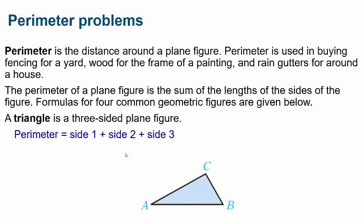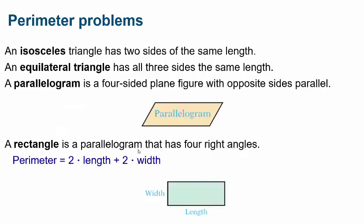Now let's move on from angles and talk about perimeter. The perimeter is the distance around a plane figure. It's used in real-world applications like buying fencing for a yard, wood for a picture frame, or rain gutters for a house. The perimeter of a plane figure is the sum of the lengths of its sides. For a triangle, you simply add up the length of each of the three sides.